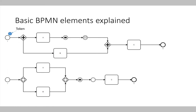In the upper part of the slide we see a token which represents one instance of the process. Using this token we can see how our process is executed. It starts at the start event, and once we arrive at the split gateway, the token is split into two tokens. The first token moves along the upper part of the process, the second along the lower process path. So in this example, first activity B is executed, next activity A is executed. We also see a second instance — more instances of a process can run in parallel, represented by an orange token.